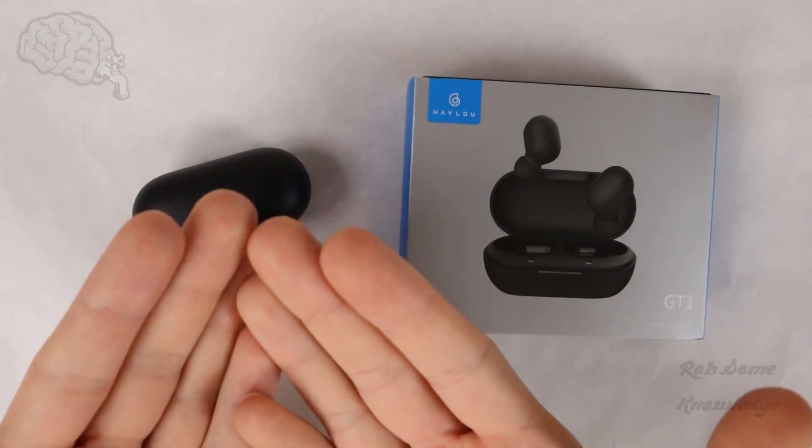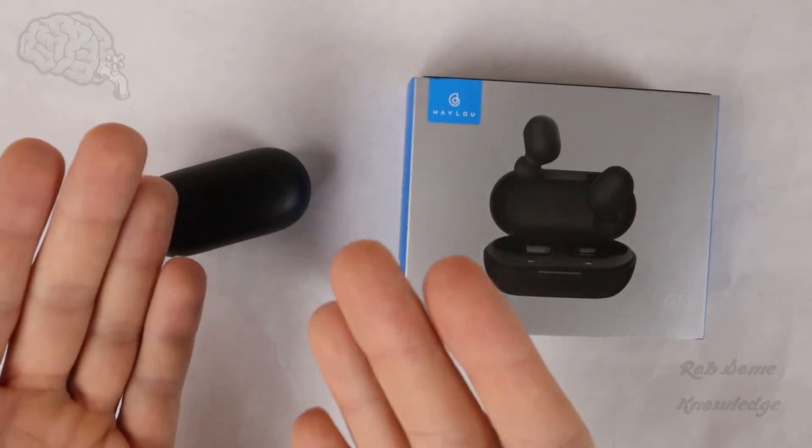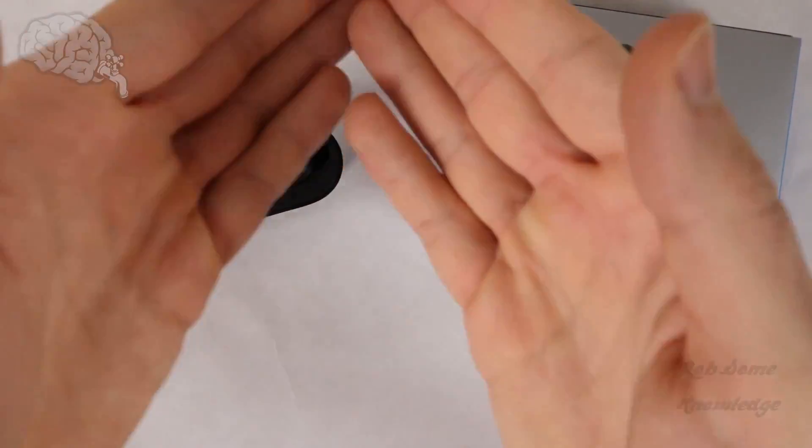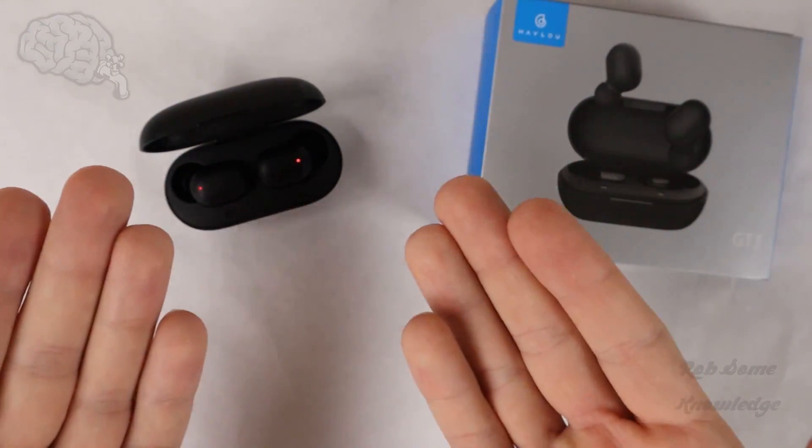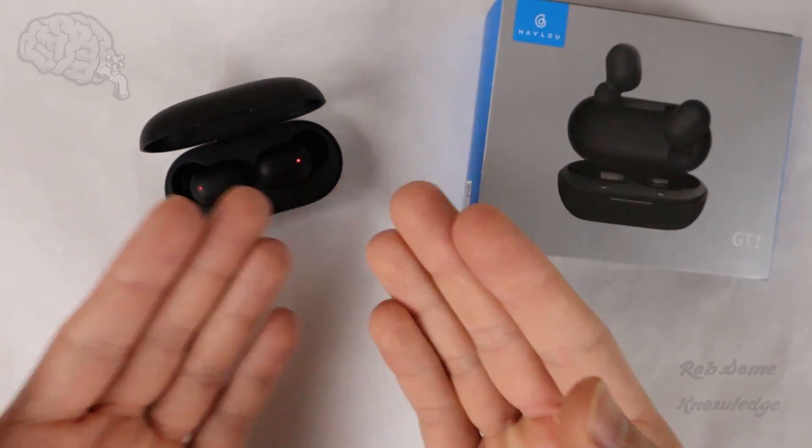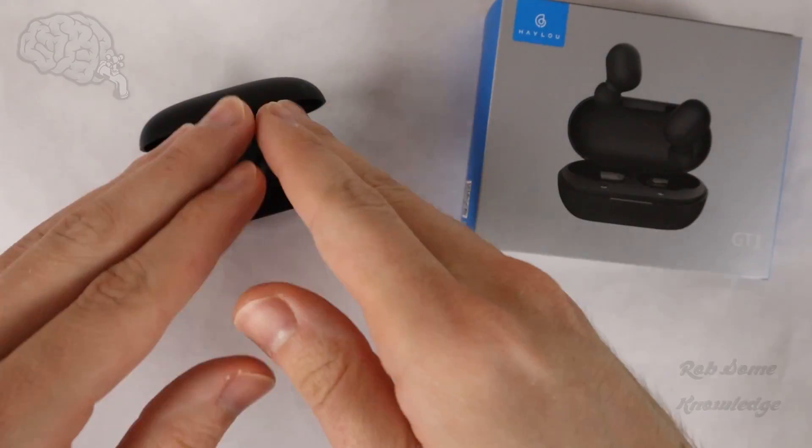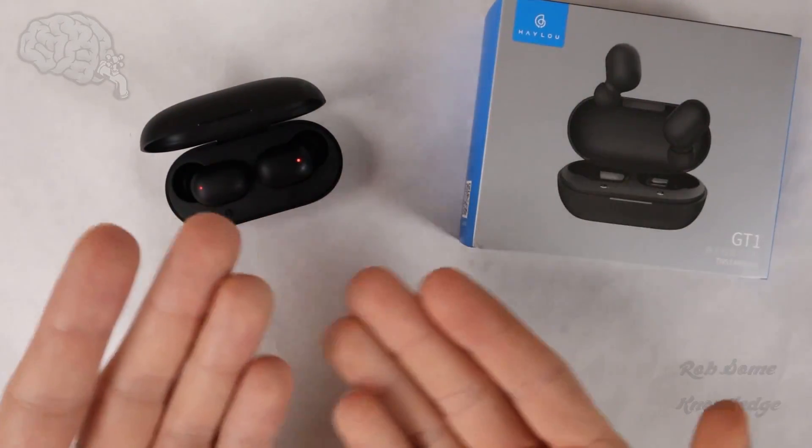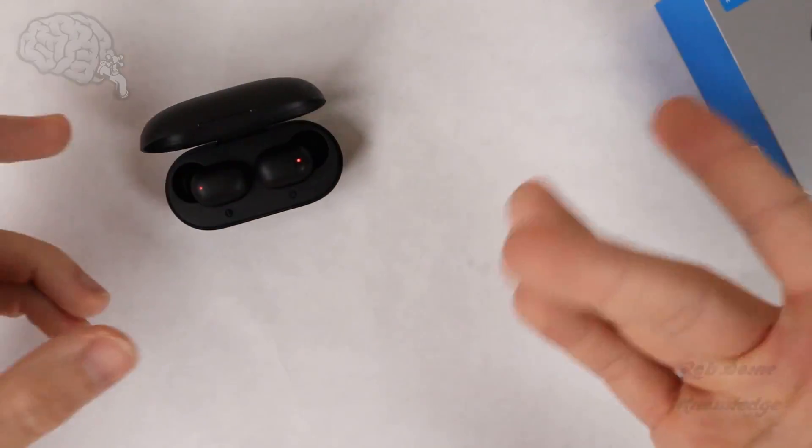This is the first time this has happened to me. I've had these for a few months now. When I took them out of the case, they normally automatically connect to the last device, and they did this time, but audio was only coming out of one earbud. I tried resetting by putting them back in the case and taking them out a few times, but it didn't work. So we need to do a factory reset, and I'll show you how.